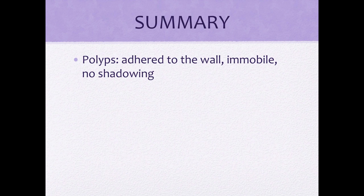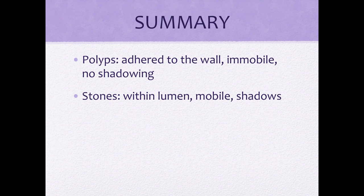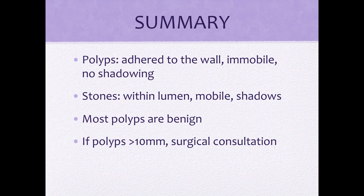To recap: polyps are adhered to the wall of the gallbladder, are immobile, and cast no shadow. While stones are located within the gallbladder lumen, are mobile, and cast a shadow. Most polyps are benign, and if they're greater than or equal to ten millimeters the patient will need a surgical consult.